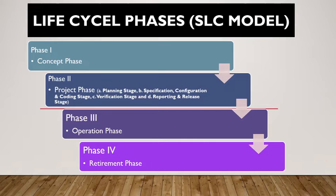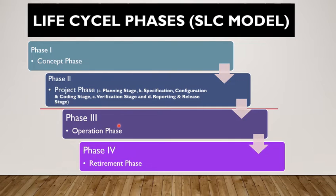Phase 1 is called the concept phase. Phase 2 is called the project phase, and this project phase is further divided into 4 different stages: planning stage, specification configuration stage, verification stage, and reporting and release stage. Phase 3 is called the operation phase, and phase 4 is called the retirement or decommissioning phase.